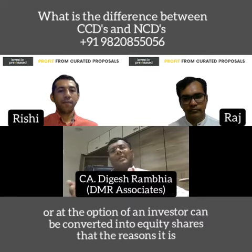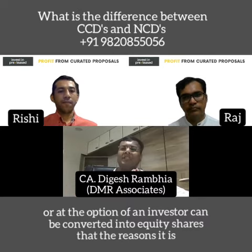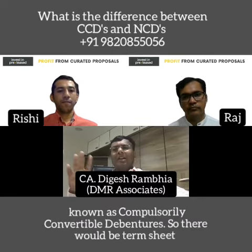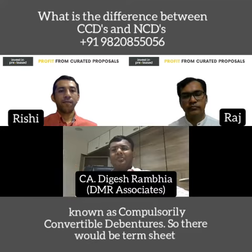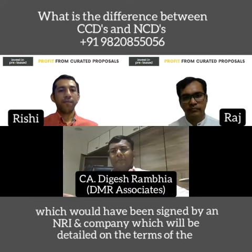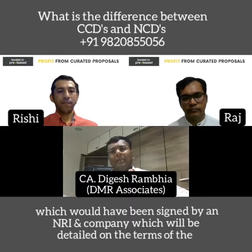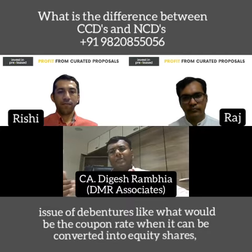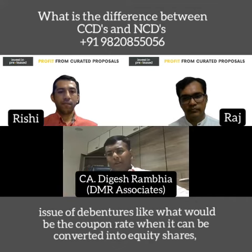At the option of either the company issuing it or the investor, the debentures can be converted into equity shares — that's the reason it is known as compulsory convertible debentures. There will be a term sheet signed by the NRI and the company which will detail the terms of the issue.